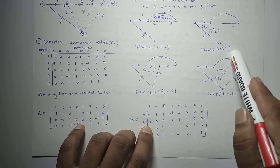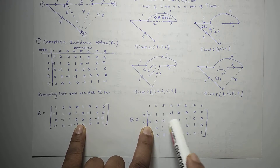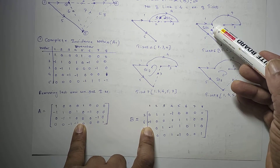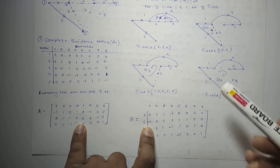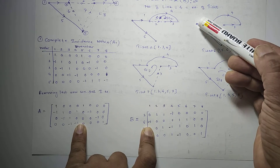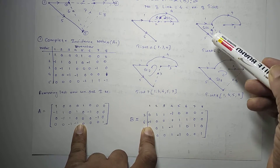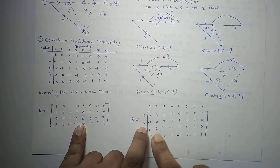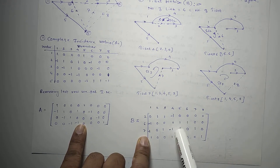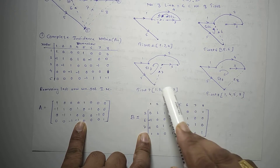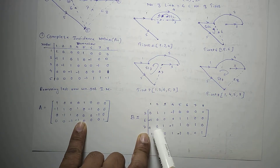For tie set 6, formed by branches 1, 5, and 6, place 1s at positions 1, 5, and 6. Branch i1 is opposite to the link current direction i6, so branch 1 is negative. Branch i5 is in the same direction as i6, so branch 5 is positive. For tie set 7, formed by branches 1, 3, 4, 5, and 7, branches 4 and 1 are negative.